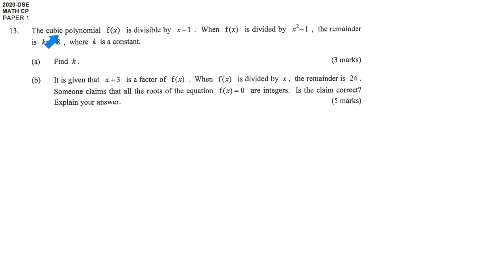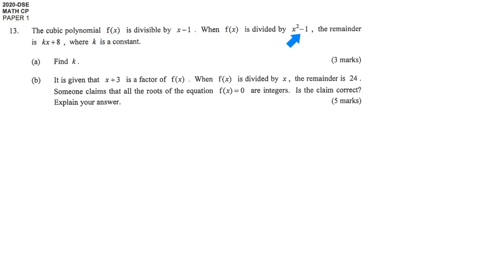In this question, they say a cubic polynomial which is divisible by x minus 1. That means the highest power of x is 3, and at the same time they say that when f(x) is divided by x squared minus 1, the remainder will be kx plus 8.